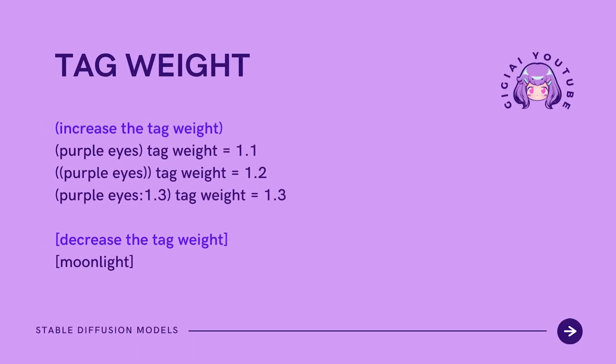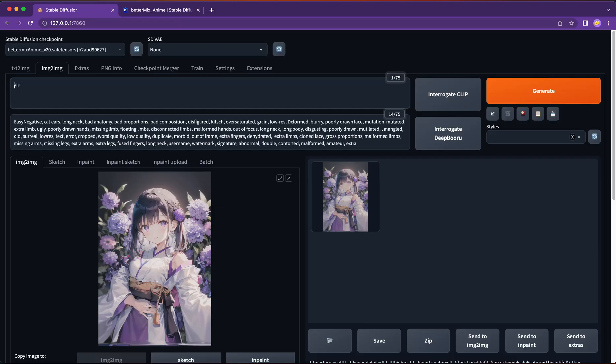I decided to type in my own prompt for the demonstration. Just a quick note on how to add tag weight to a tag: you can use round brackets to add weight. One layer of round brackets equals 1.1, two layers equals 1.2. An easier way to define the weight is to write a round bracket followed by a tag, a colon, and a number — that number refers to the weight of the tag. We can use square brackets to decrease the tag weight in the same logic. For now, I want to keep it simple, so let's type in a girl and a moon.